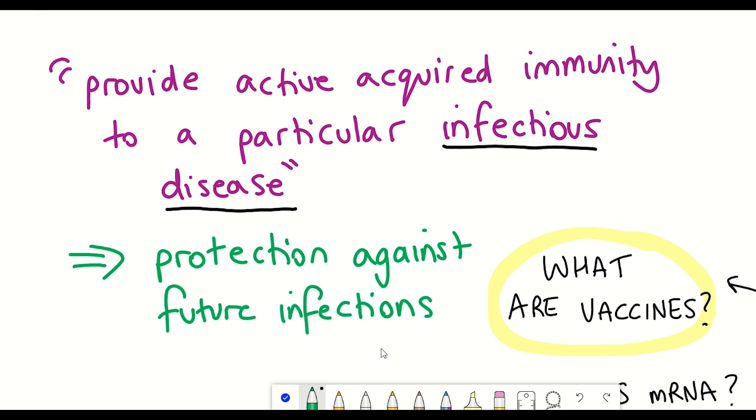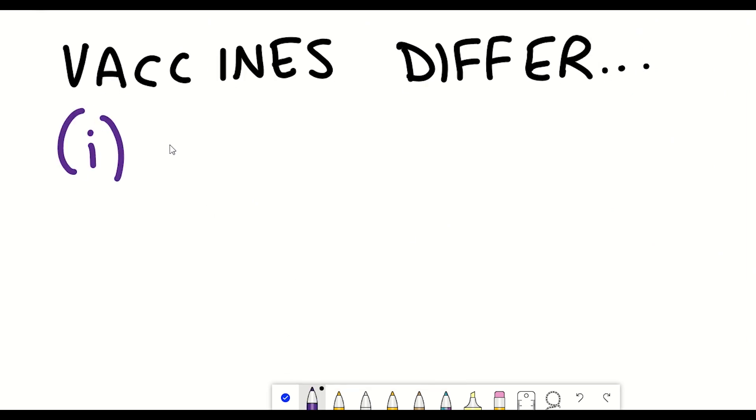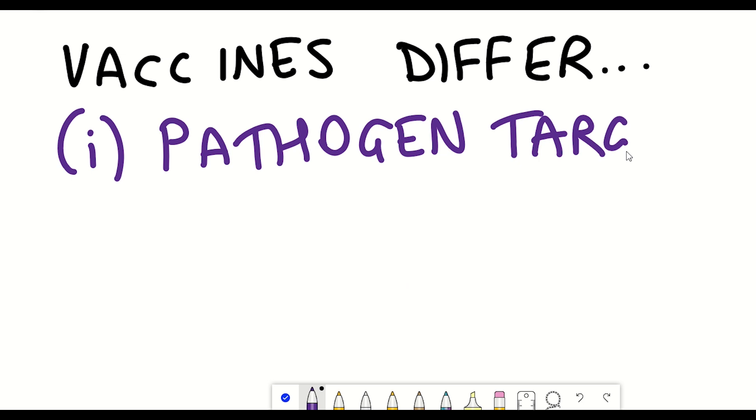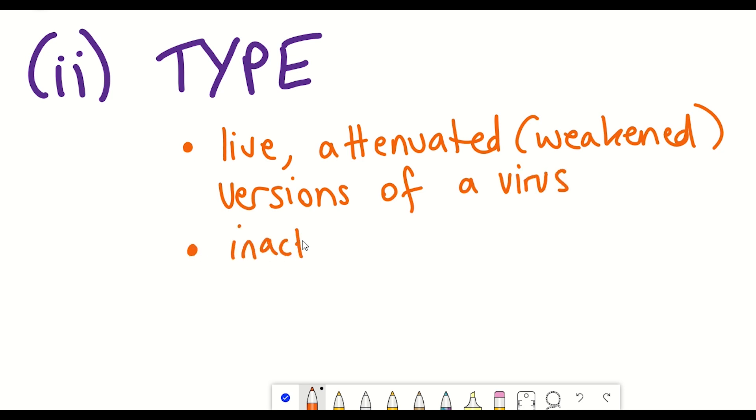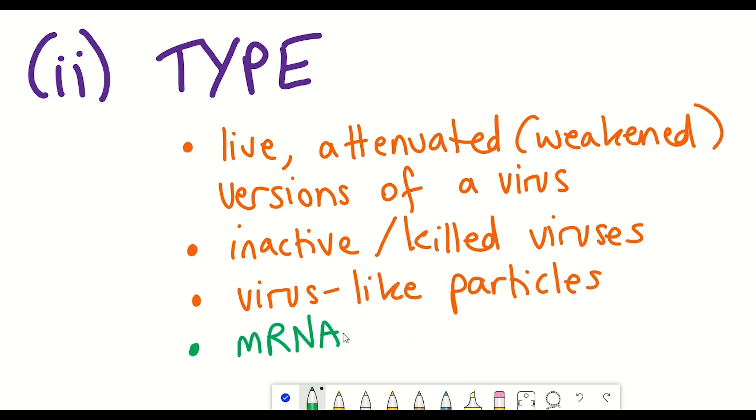So vaccines not only differ in terms of what infectious agents they're trying to protect against, but they also vary in the way that they are designed. For example, they could be live attenuated versions of that virus, they could be inactivated or killed viruses, they could be virus-like particles, or as we'll see later in this video, they could be mRNA based.